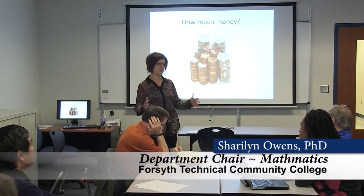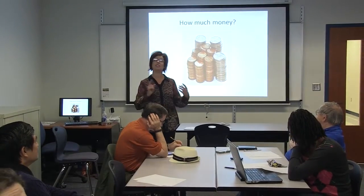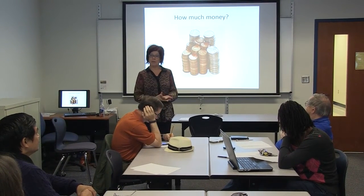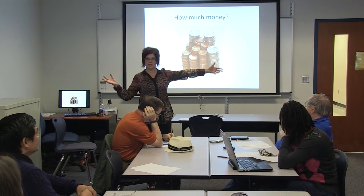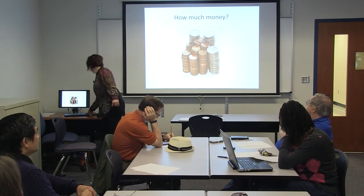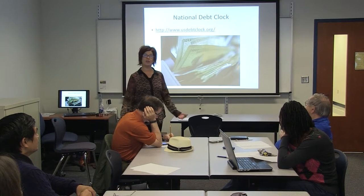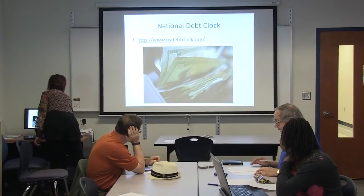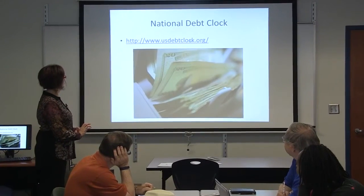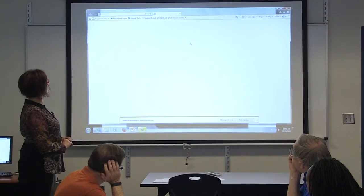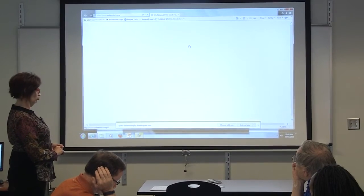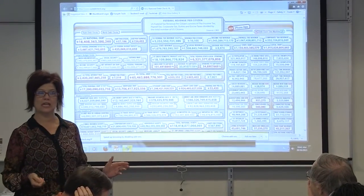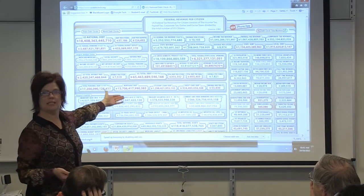Now that we have some context for how big a million, billion, or trillion is in time, another context I can relate to is to put it in terms of money. We have an idea how big a trillion is now. Let's go to our U.S. debt clock and see how big our debt is. The national debt clock shows 18 trillion dollars.